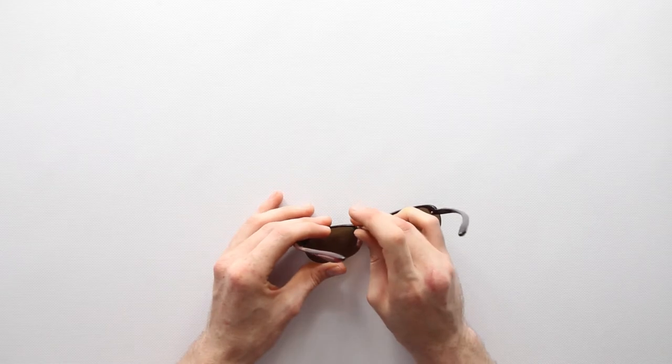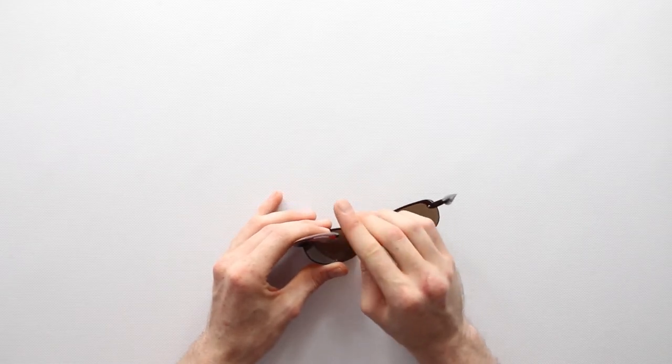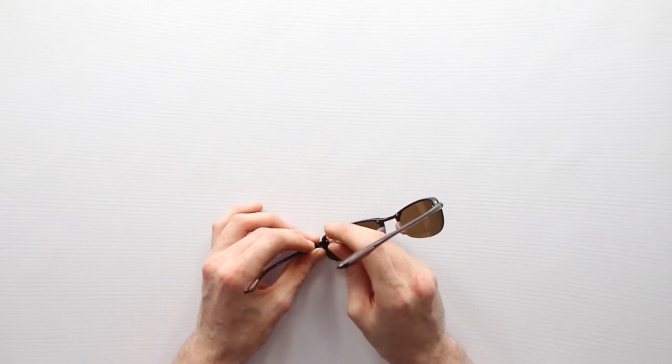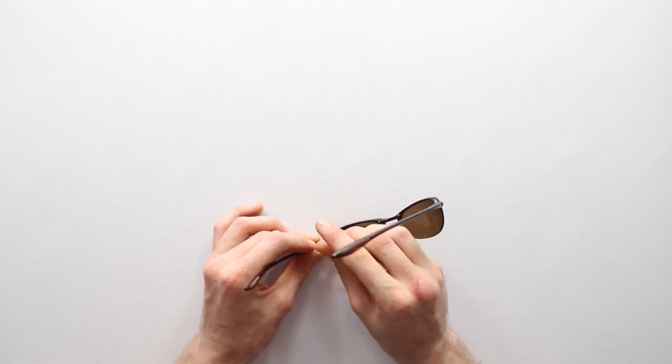When both lenses are screwed into the sunglass frames turn the frames upside down and run your finger along all the grooves to ensure that the lenses are fitting nicely in the frames.